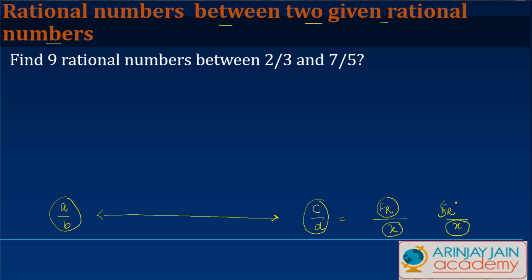The numerator could be anything for the first rational number, the numerator could be anything for the second rational number. Let's look at this: you are told to find nine rational numbers between 2/3 and 7/5.